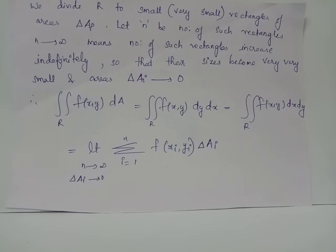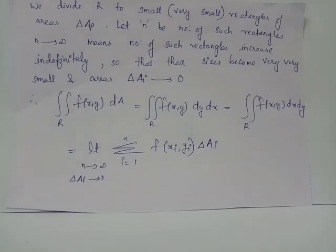Similar to the previous cases, we consider n tending to infinity — that is, increasing the number of sub-regions of volumes delta Vi. When the number of sub-regions increases, delta Vi approaches 0, from which we obtain the triple integral over region V of f of xyz dV equals limit n tends to infinity, summation i from 1 to n, f of xi yi zi multiplied by delta Vi.